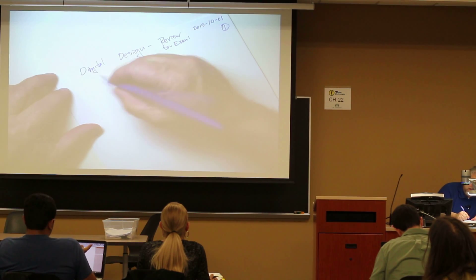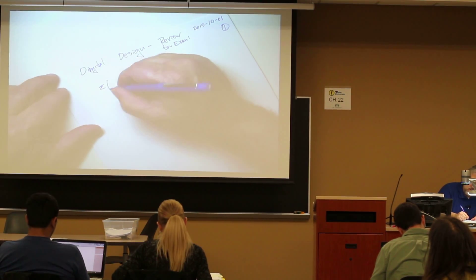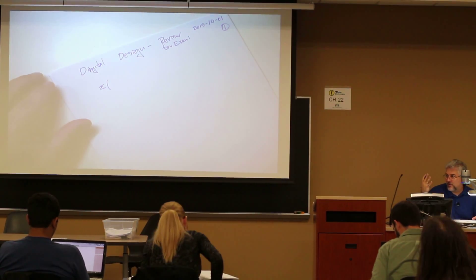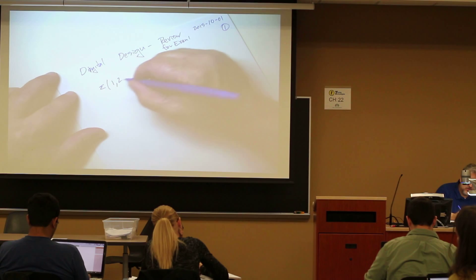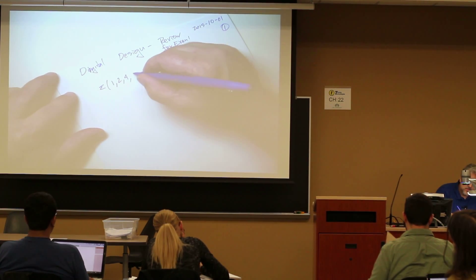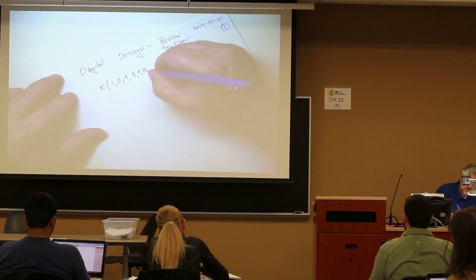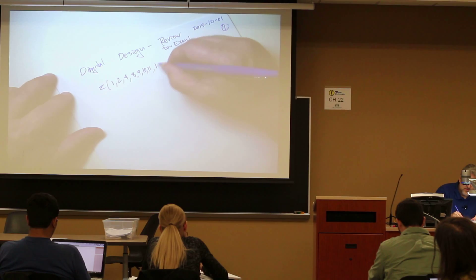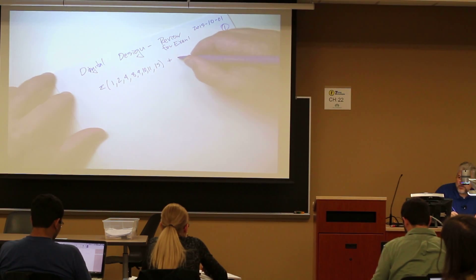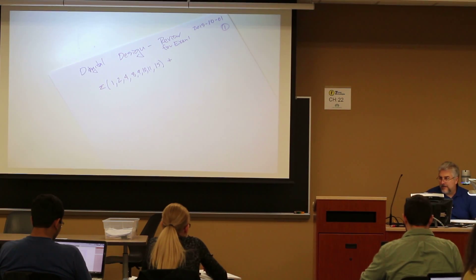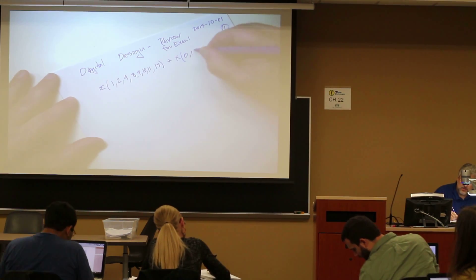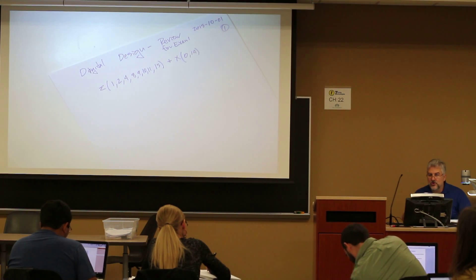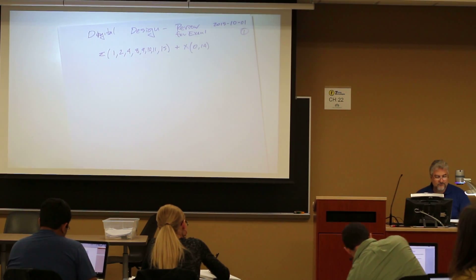So let's say we have a sum of terms, right? And we're going to have four inputs. Four inputs, right? So that means I'll have 1, 2, 4, 8, 9, 10, 11, 15. And then I have don't cares and all of a sudden I'm not remembering the designation for don't cares. I'll do this. Then I have don't cares of 0 and 14. Remember what don't care means? It could not be involved in the equation.